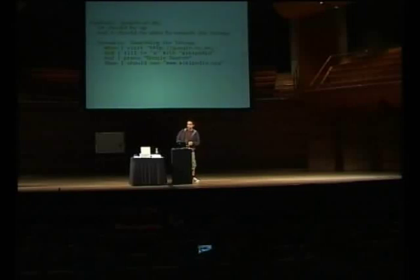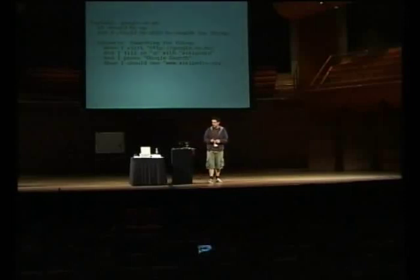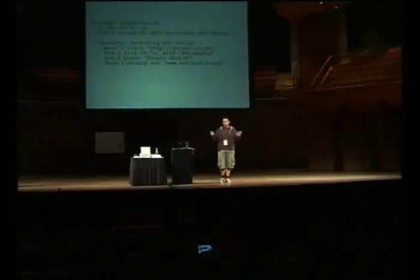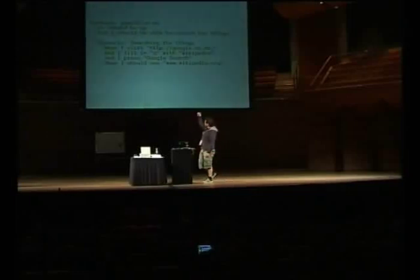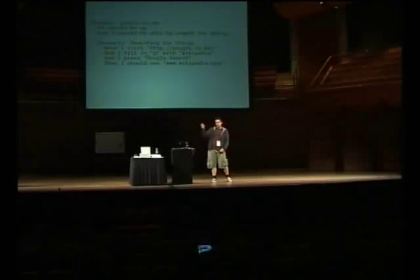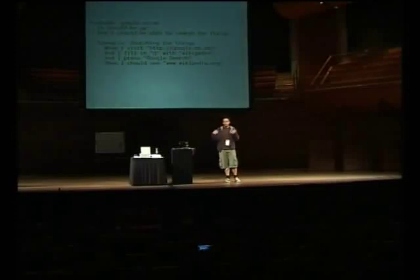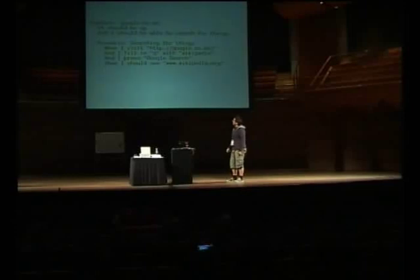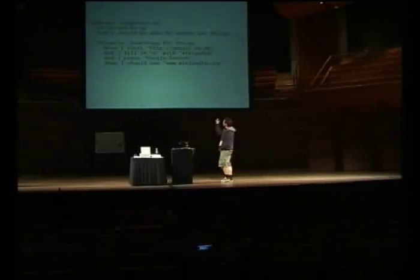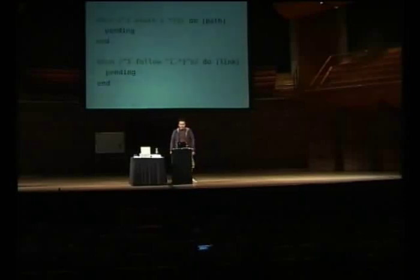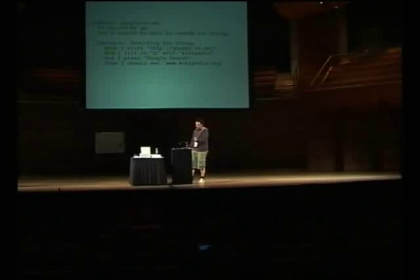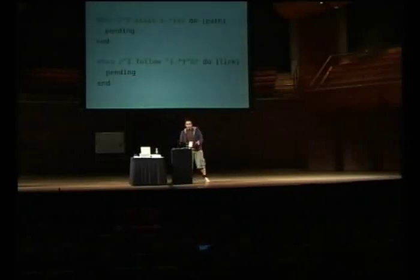So who here has heard of Cucumber before? Okay, there are a few people. For the people who don't know what it is, Cucumber basically allows you to write executable specifications in a domain-specific language. So what you can see here on the screen, we have Cucumber features, and they pertain to a feature of something that you're testing. Within that you've got different scenarios for interacting with that feature. What we're saying here is, when I go to google.co.nz and I fill in the query text box with Wikipedia and I press Google Search, then I should see that text somewhere on the page. The way that Cucumber works is it maps each of those steps — like when I visit, and I fill in, and I press — to a small Ruby DSL.